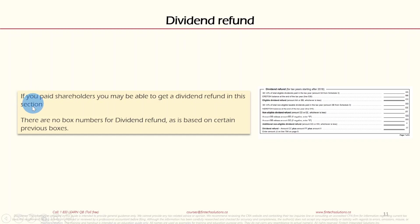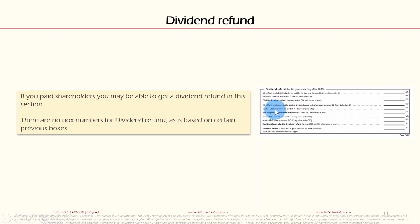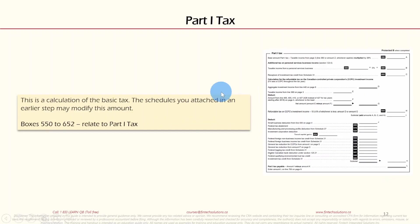Section 9 is Dividend Refund. If you paid dividends to shareholders, you may be able to get a dividend refund in this section. There are no standalone box numbers for dividend refund as it is based on certain previous boxes. This is connected to the RDTOH — if dividends have been paid to shareholders, the calculations for any potential refund will be shown here.